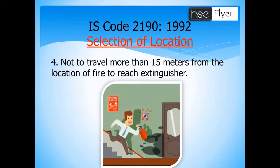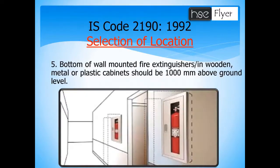This code also states that the fire extinguisher should be kept in a location such that no one should have to travel more than 15 meters to reach the incident location from the fire extinguisher. If required, you may increase the number of fire extinguishers depending on the risk level of the location.